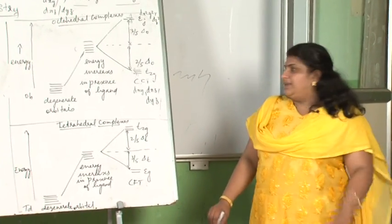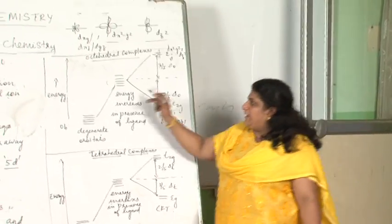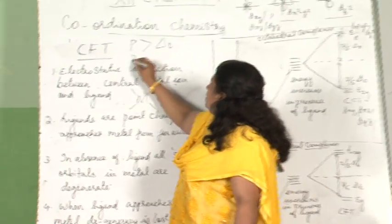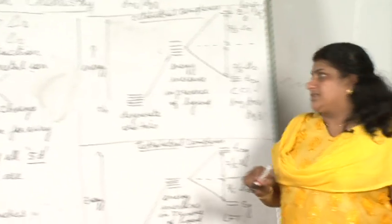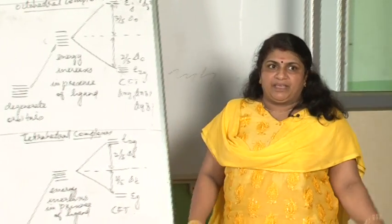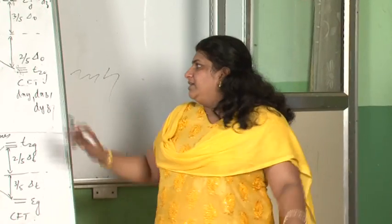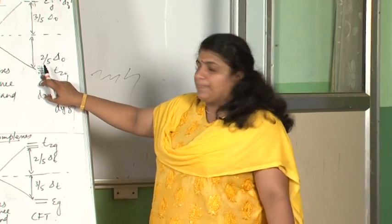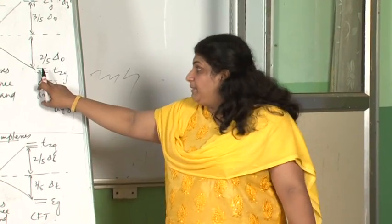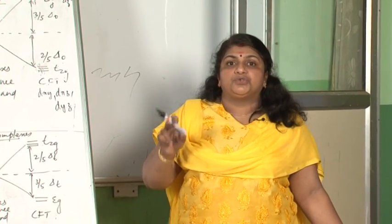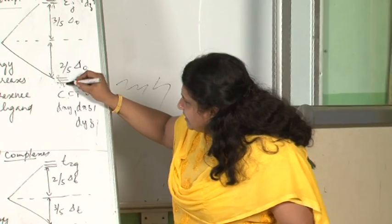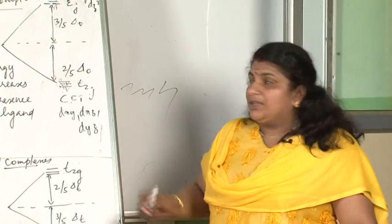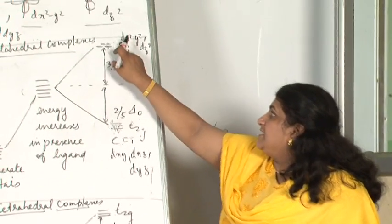Case 2: The pairing energy is small and the energy gap is high. This happens in some complexes. In that case, pairing energy is too small, so it can be paired here. 1, 2, 3, fourth electron comes here, fifth comes here. This eg level will remain empty, so you will get spin-paired, diamagnetic complexes.